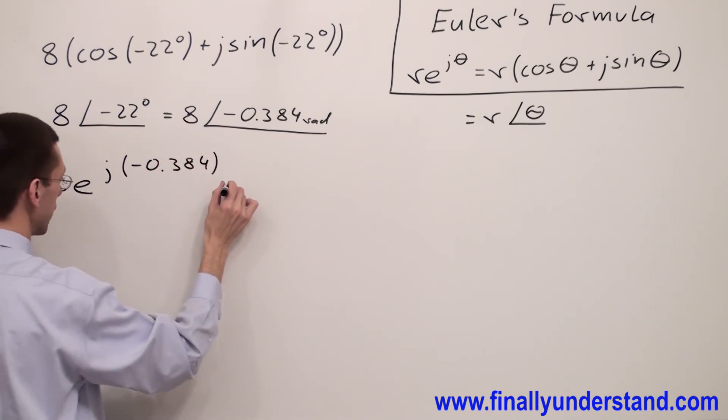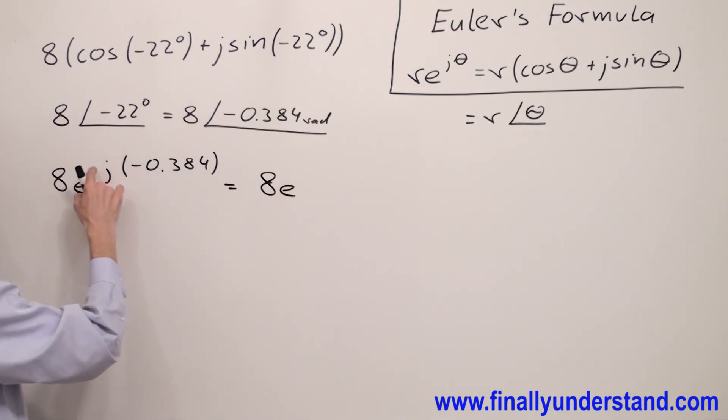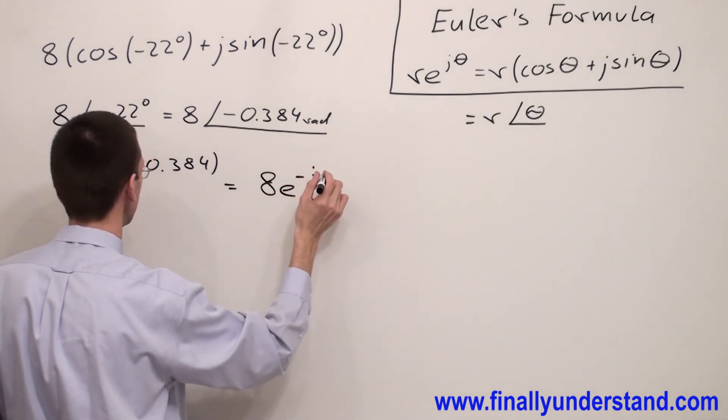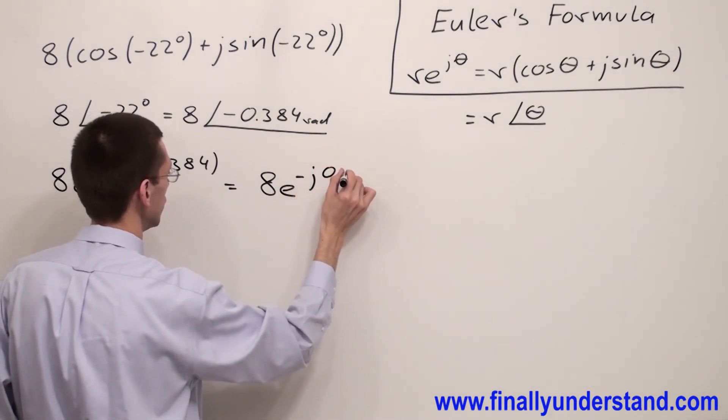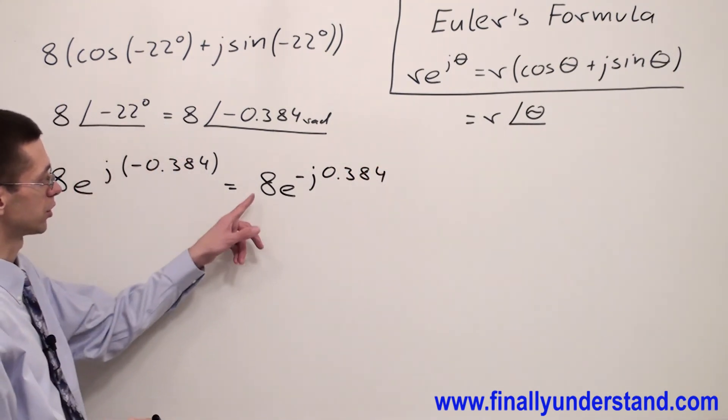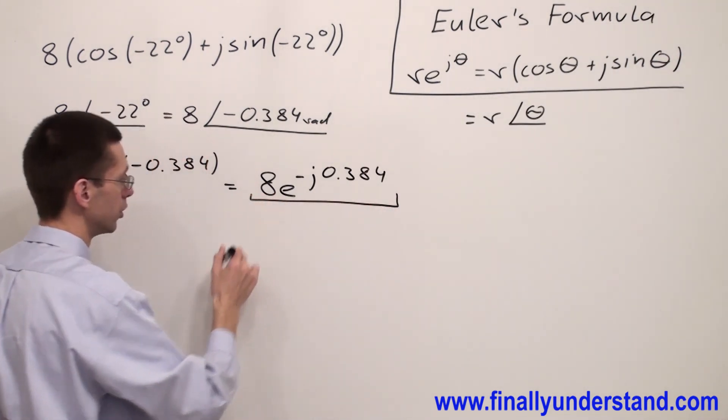We can rewrite this as 8 e, and the negative I'm going to write at the front of j, so I'm going to have negative j 0.384, and this is my exponential form. I can say this is the solution to my problem.